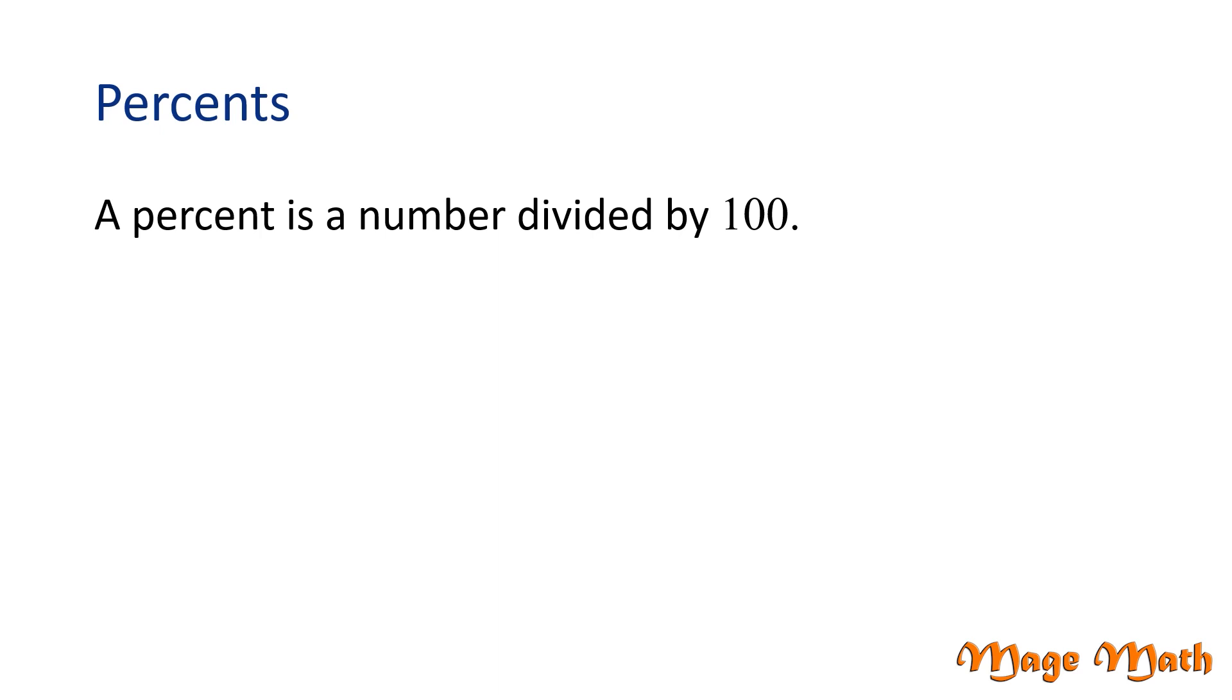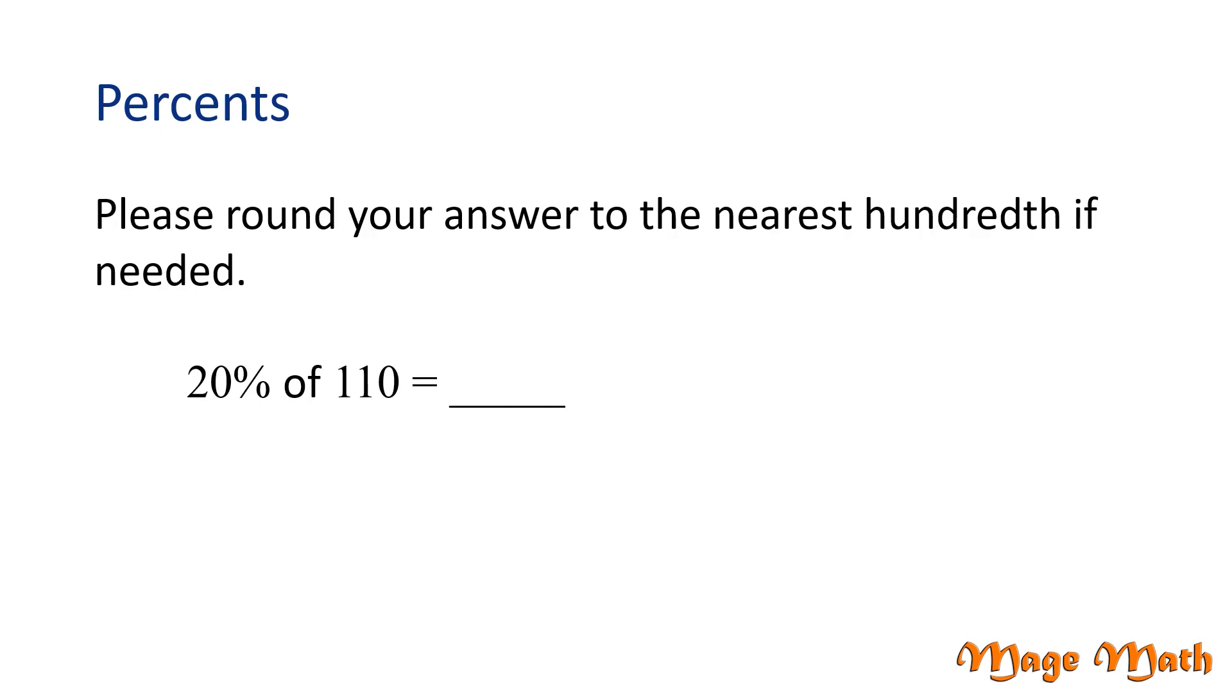Let's look at an example. Please round your answer to the nearest hundredth if needed. 20% of 110 equals blank. A percent is a number divided by 100, so 20% can be written as 20 divided by 100. The word of implies to multiply, so we are really wanting to solve this problem: 20 over 100 times 110.